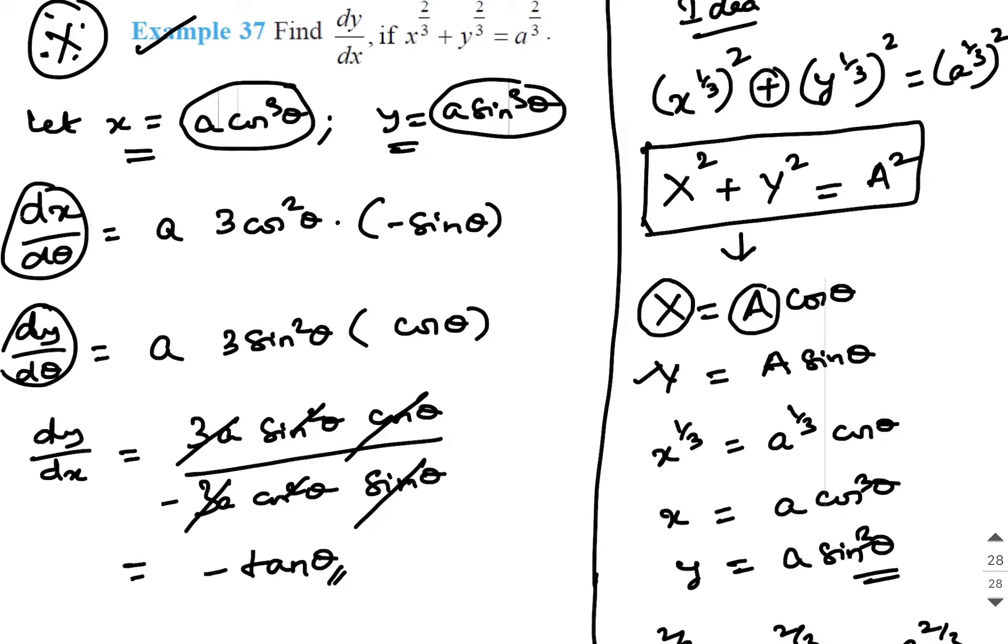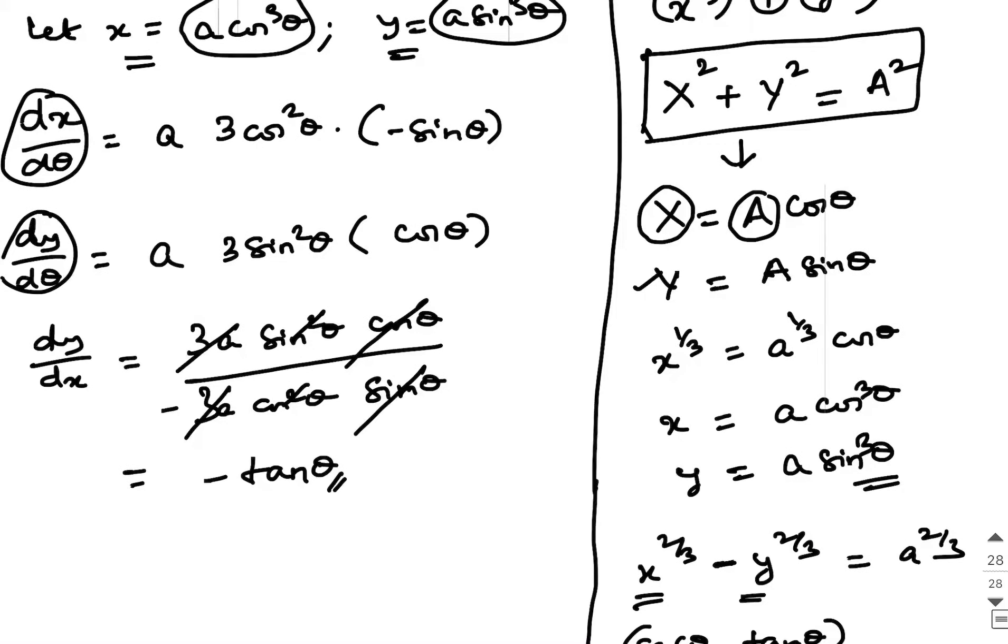Tan theta means what? We have x equals A cos cube theta, y equals A sin cube theta. If I do y by x, what is that we are going to get?